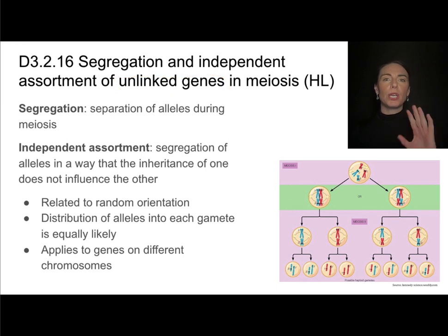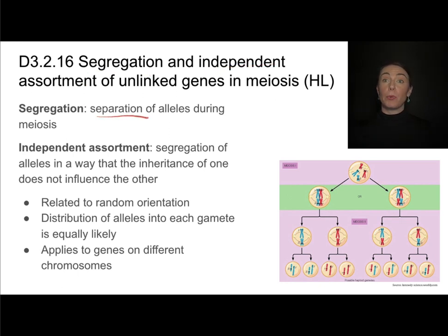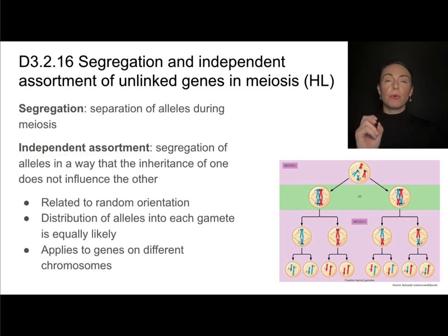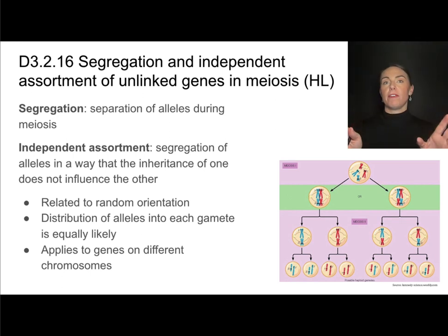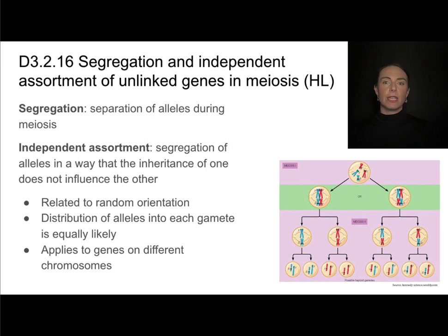Since we're working with unlinked genes, we really need to be thinking about segregation and independent assortment. Segregation means separation — the separation of alleles during meiosis. This is related to Mendel's law of independent assortment: the segregation of alleles in a way that the inheritance of one does not influence the other. So if there is a gene on one chromosome, the inheritance of alleles for that gene isn't affected by how alleles are inherited from a different chromosome.